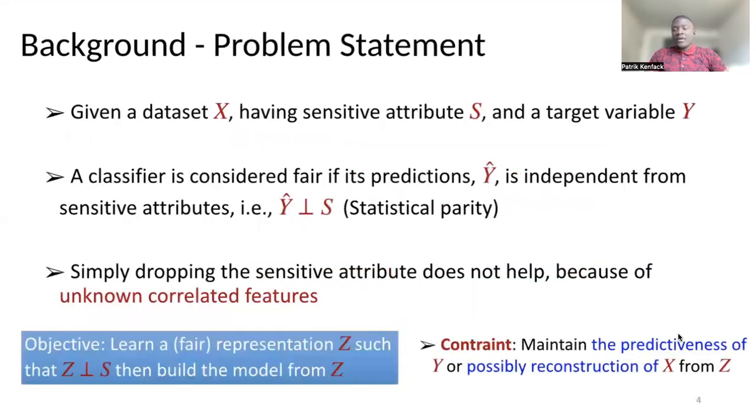We consider a situation where we have a dataset X, having sensitive attribute S, for example gender or race, and a target variable Y. So basically, we are interested in classification problem. If you train a classifier from X, it is considered fair if its predictions, Y hat, is independent from the sensitive attribute.